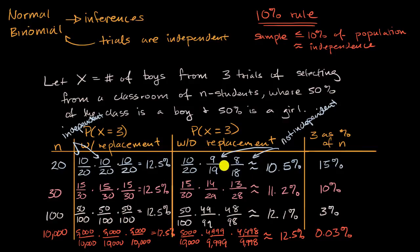But look over here. When three is a fairly large percentage of our population, in this case it is 15%, the percent chance of getting three boys without replacement is 10.5%, which is reasonably different from 12.5%. It is 2% different, but 2% relative to 12.5%. So that's someplace in between 10 and 20% difference in terms of the probability. So this is a reasonably big difference.